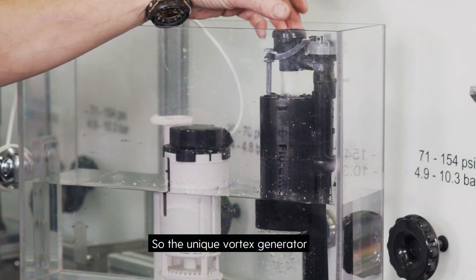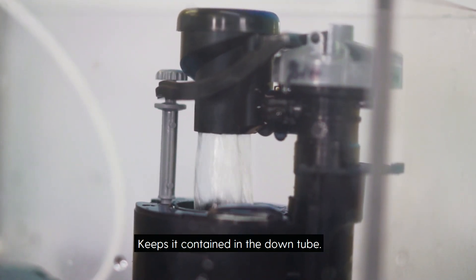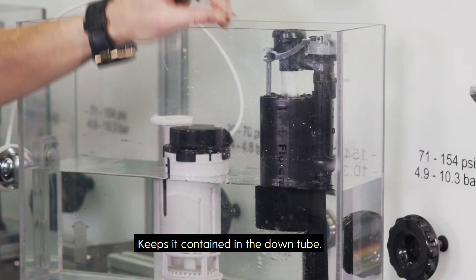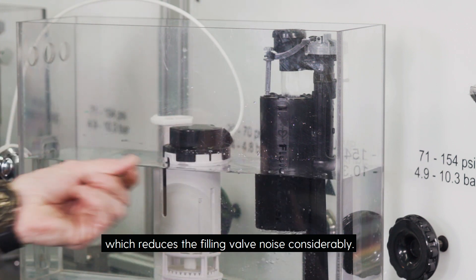The unique vortex generator spirals the water as it comes out of the valve and keeps it contained in the down tube. The down tube fills under the water level, which reduces the filling valve noise considerably.